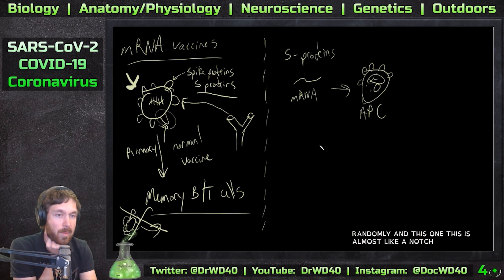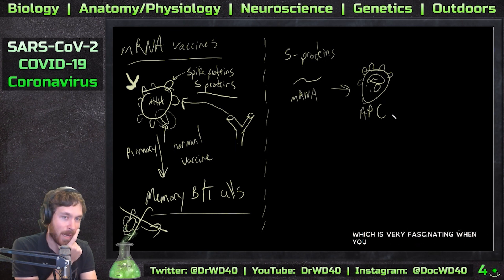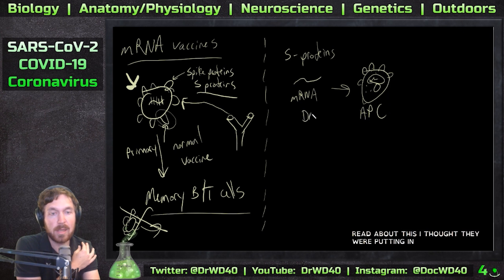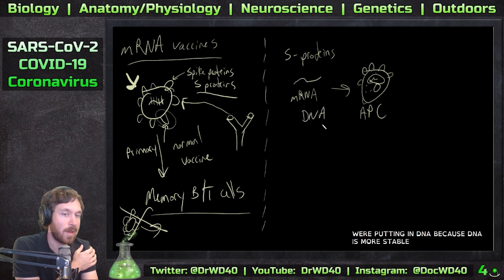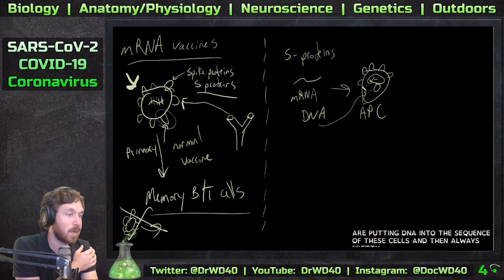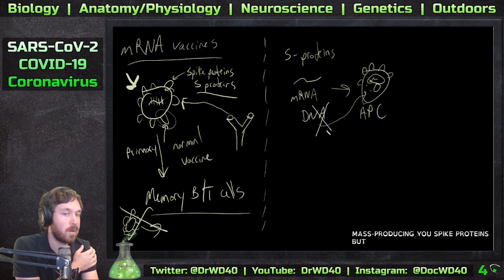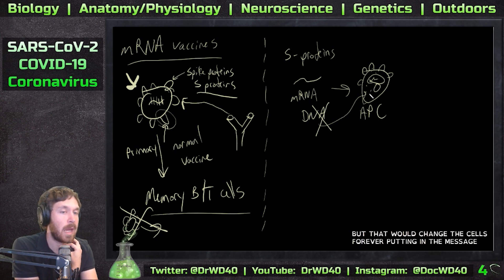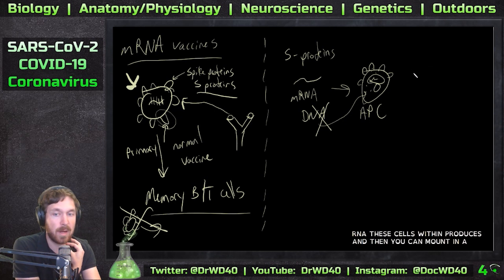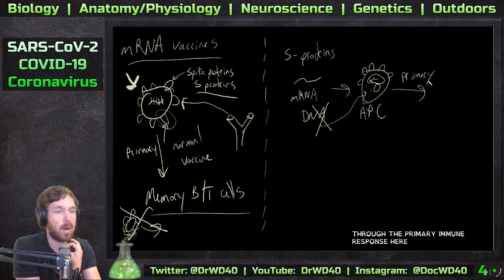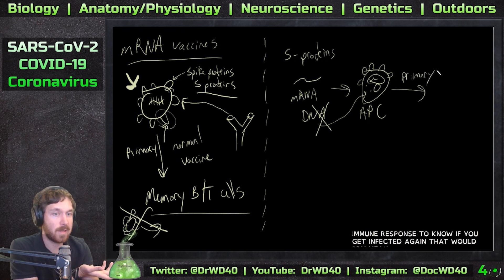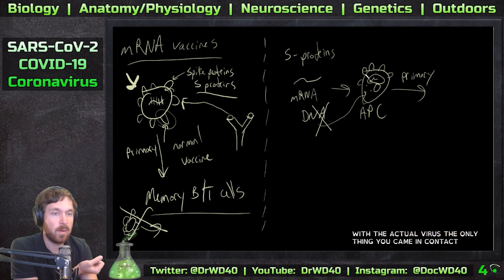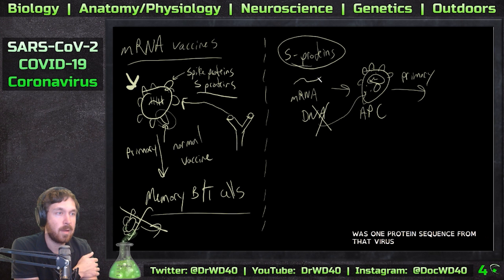This is almost like an autoimmune disease in a way, where your body's own cells are producing the protein that your body then rejects — which is fascinating. I initially thought they were putting in DNA, since DNA is more stable. Putting in DNA would change those cells forever, but putting in messenger RNA means the cells produce the spike protein temporarily, you mount an immune response through the primary immune response, and you never had to come in contact with the actual virus — only one protein sequence from it.